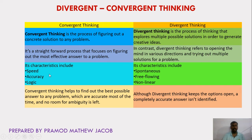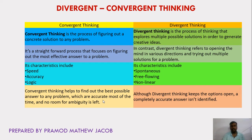The characteristics of convergent thinking include speed, accuracy, and logic. The characteristics of divergent thinking include being spontaneous, free-flowing, and non-linear — there are no restrictions in divergent thinking; we let our thought process flow naturally to find free-flowing ideas. Divergent thinking is more creative whereas convergent thinking is more logical. Solutions in convergent thinking are precise and accurate with no ambiguity, whereas divergent thinking keeps various options open and a complete accurate answer may not always be identified.